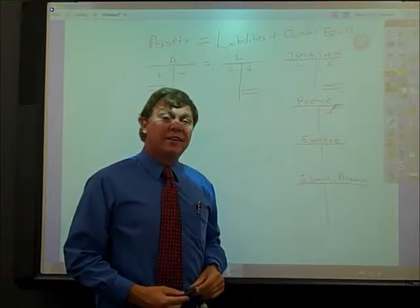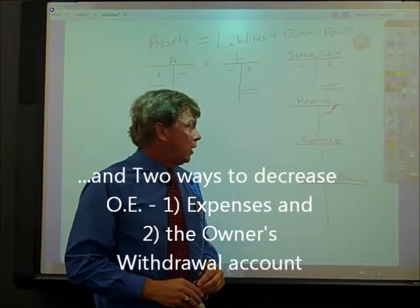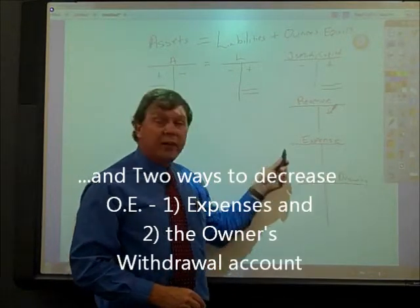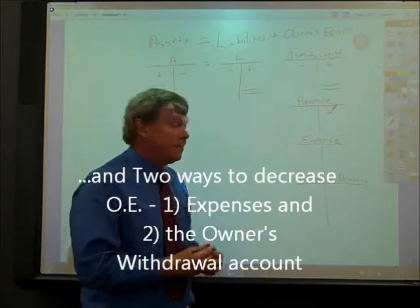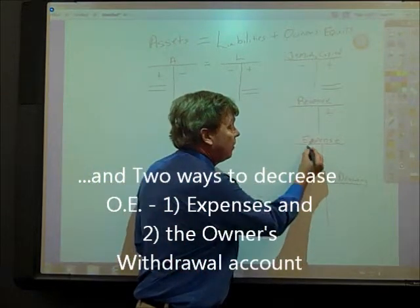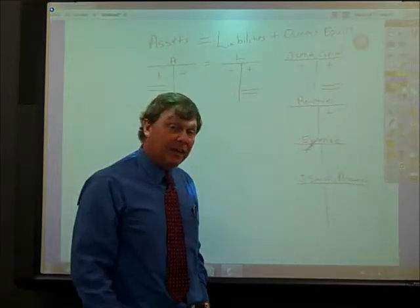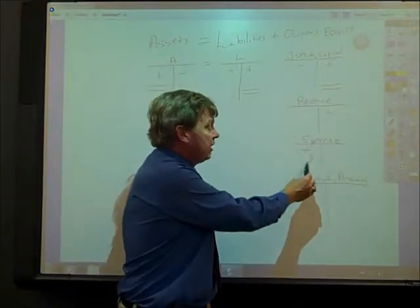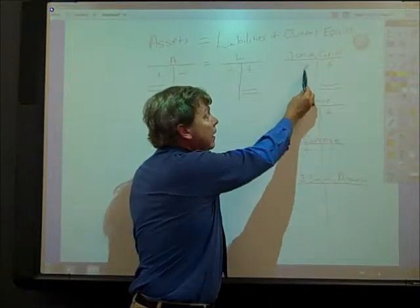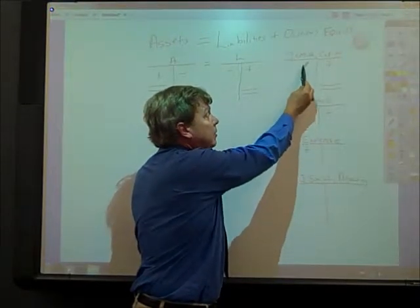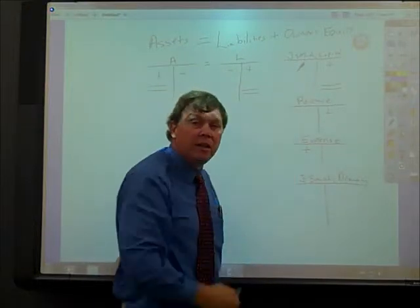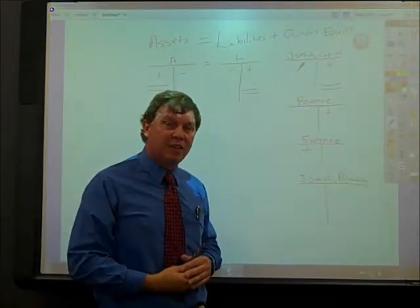There are two ways that we can decrease owner's equity. One way is through expenses. We would increase expenses on the debit side. By increasing expenses, the impact is going to be a debit to capital eventually, and that's going to show a decrease to capital.